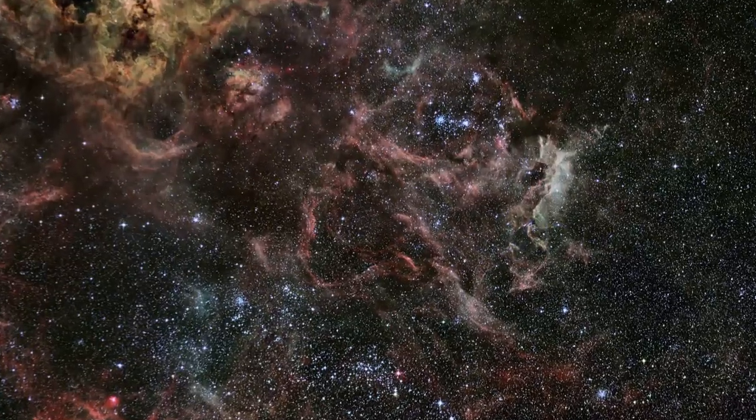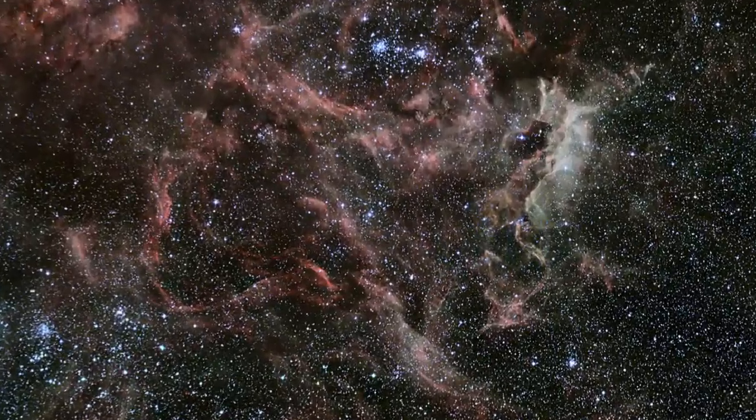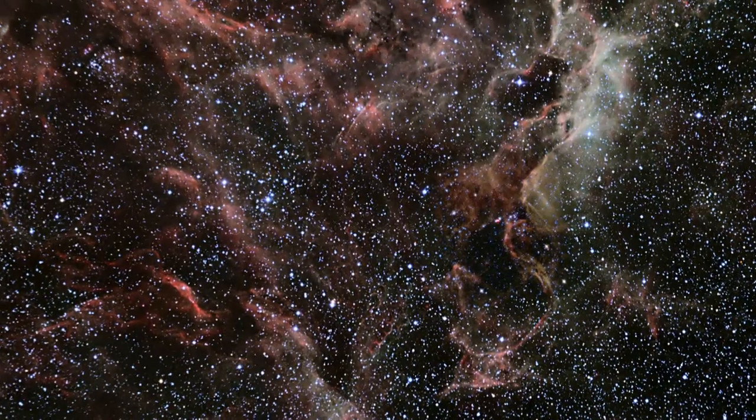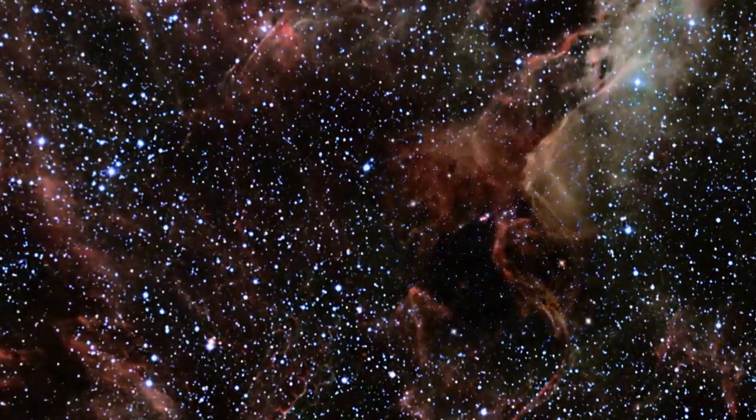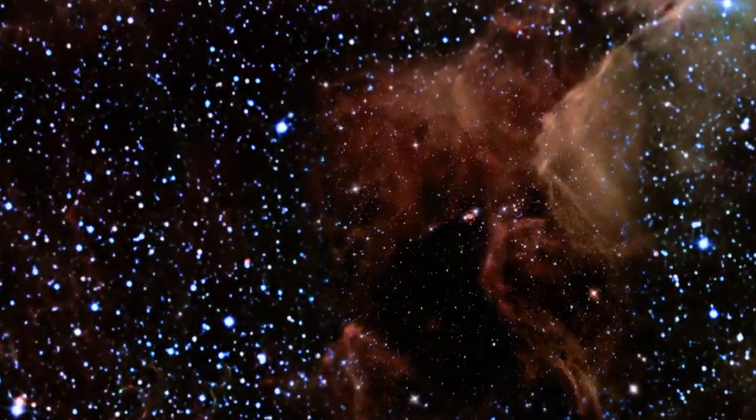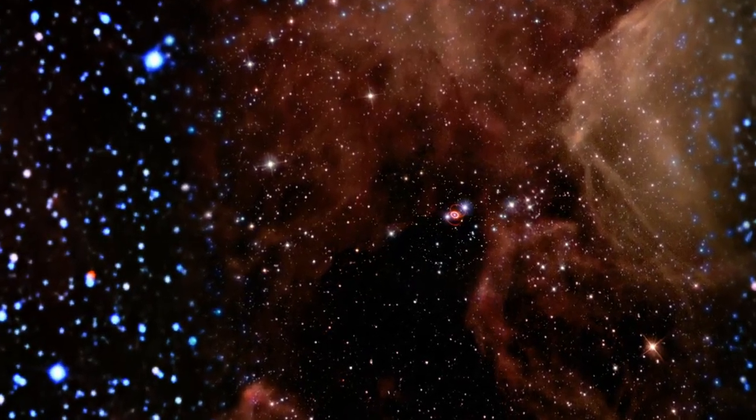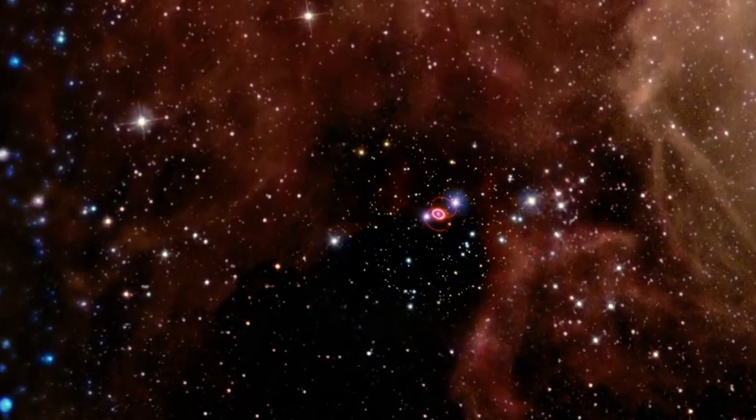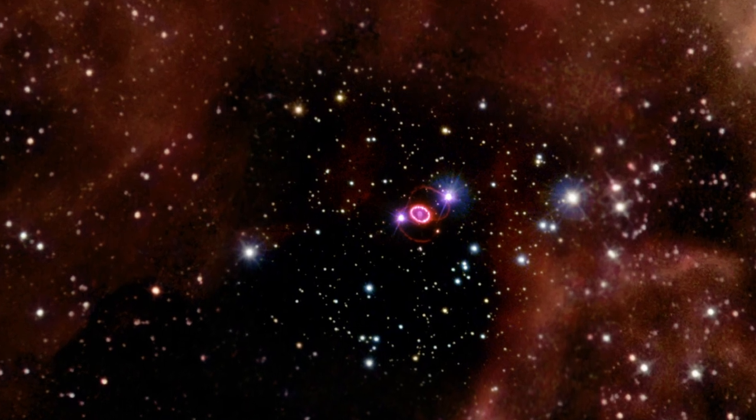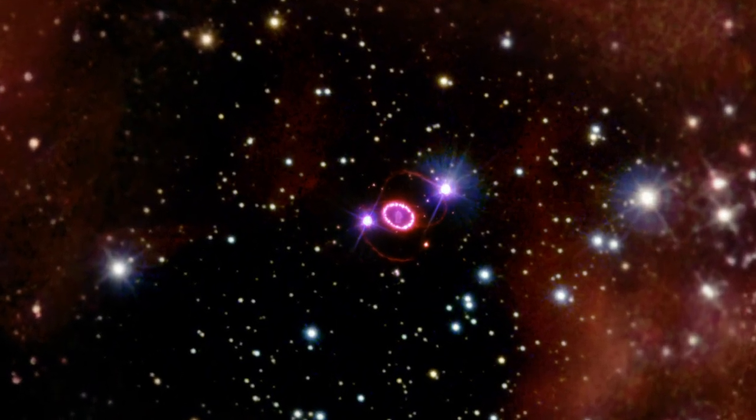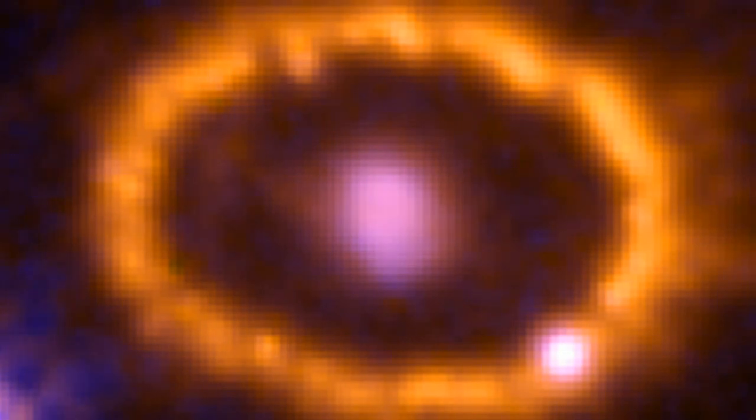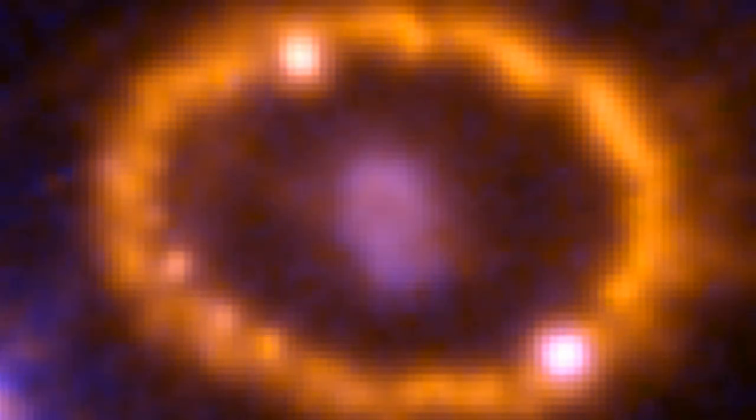The most famous supernova that Hubble has directly observed came with the death of a giant star in the Large Magellanic Cloud. The light from the initial blast first reached Earth in 1987, a few years before Hubble's launch. But Hubble's images of the evolving supernova over the quarter of a century since then have become the gold standard for understanding this event.